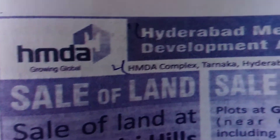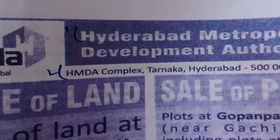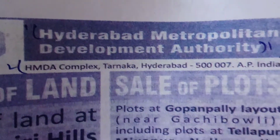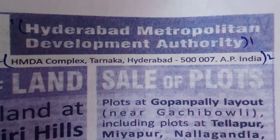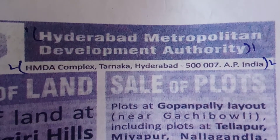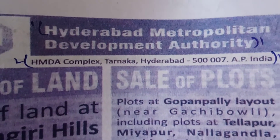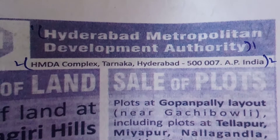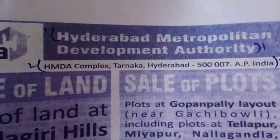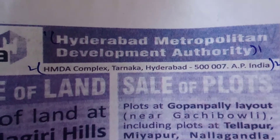Please observe. H means Hyderabad, M means Metropolitan, D for Development, A for Authority. So HMDA means Hyderabad Metropolitan Development Authority. This is the HMDA company.